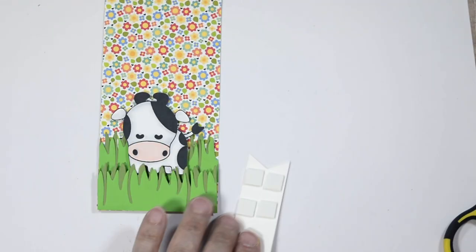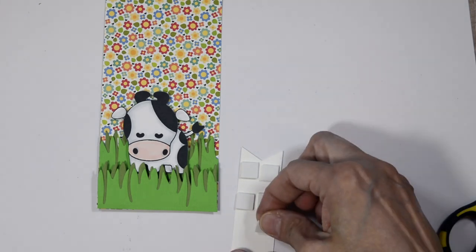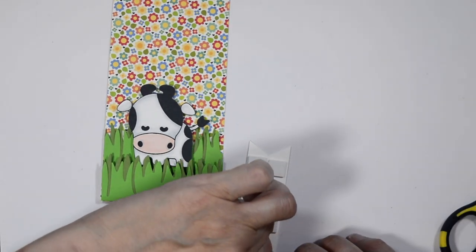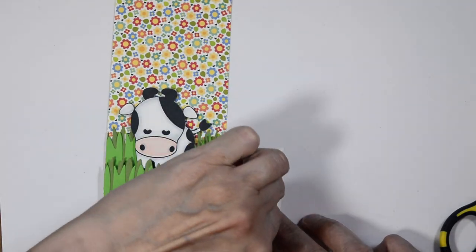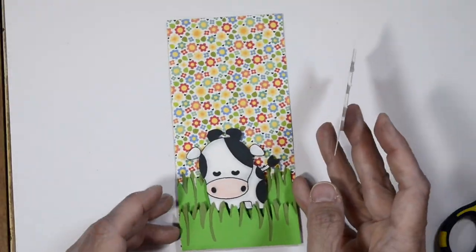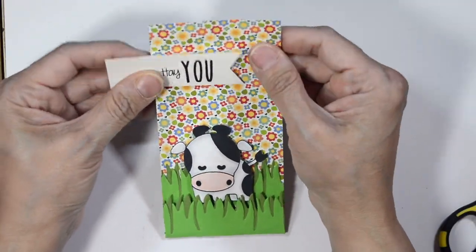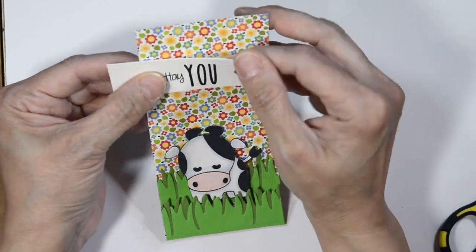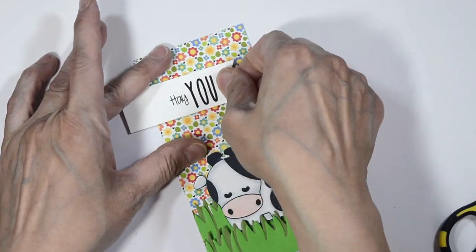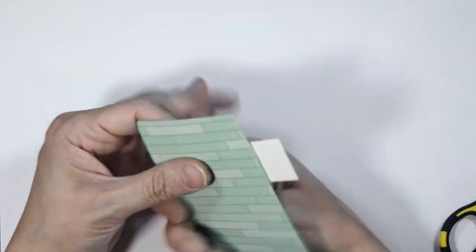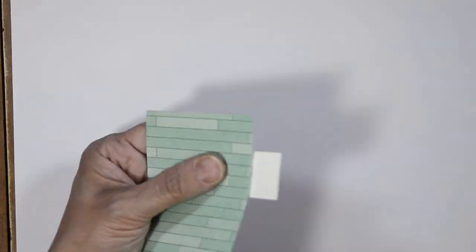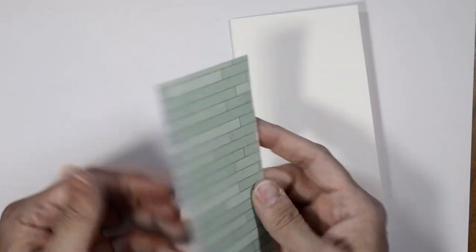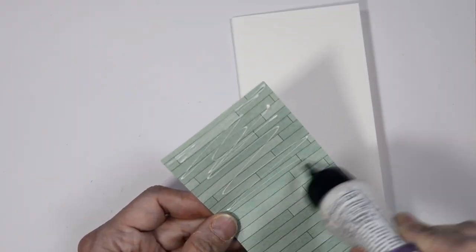I'm going to figure out exactly where I want it. I need a little bit more because I want it to be nice and firm. I'm going to remove the backing off of that and then I'll adhere our sentiment to our card panel, try to make sure it's straight. Once I know it's on there straight I will press it down and then remove any excess from our panel.